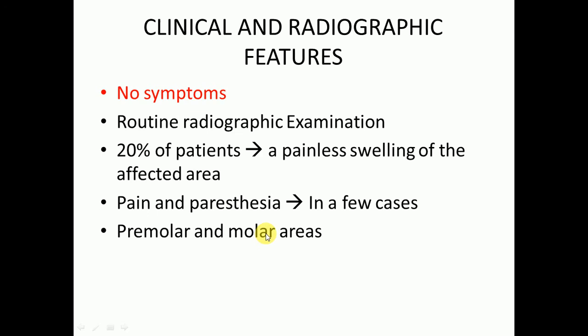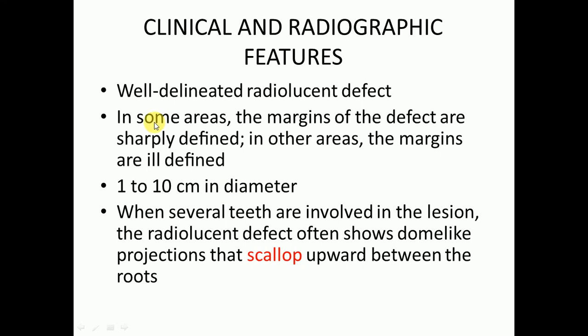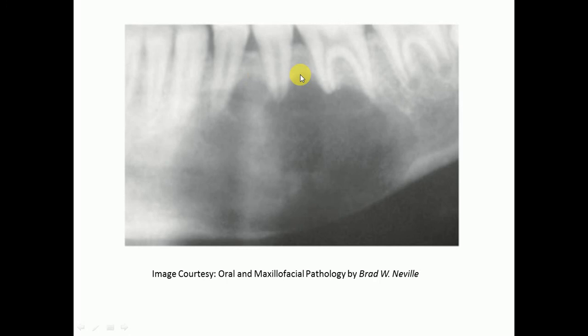Regarding radiographic features, there is a well-demarcated radiolucent defect. In some areas the margins are sharply defined; in other areas they are ill-defined. It is mostly 1 to 10 cm in diameter. When several teeth are involved, the radiolucent defect often shows dome-like projections that scallop upward between the roots. This scalloping pattern is highly suggestive of traumatic bone cyst, though it is not a diagnostic feature.